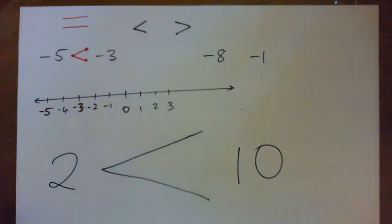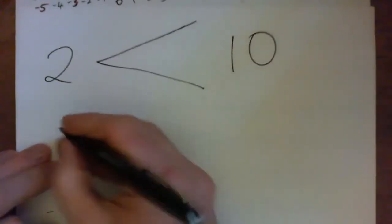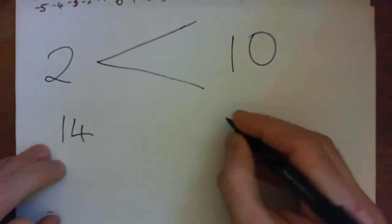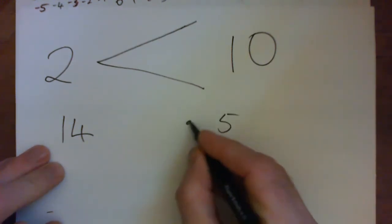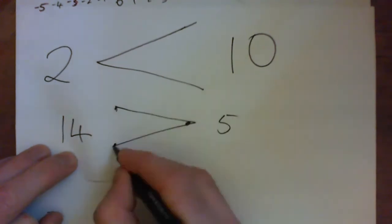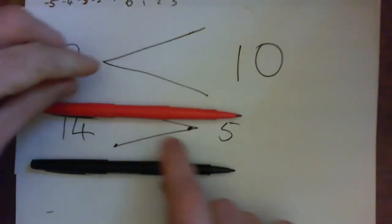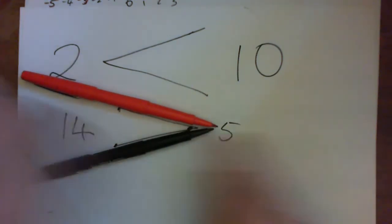Or if it was another way would be like fourteen is bigger than five, so you put the point by the five and the gap by the fourteen and the inequality sign looks like that. They're not equal, they're inequal, and fourteen is greater than five.